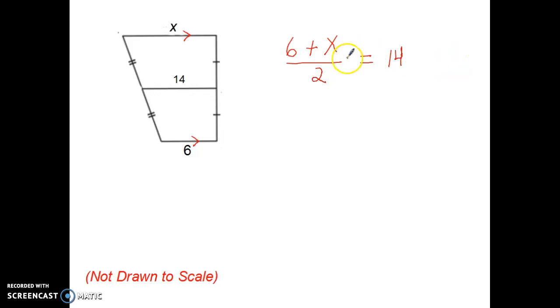Mathematically, I would want to multiply 2 to both sides of this equation. That way my twos would divide out. So in other words, the sum of the bases is actually equal to the median doubled. So my missing value for x would be a length of 22 units. And I'm going to put the 22 up here.